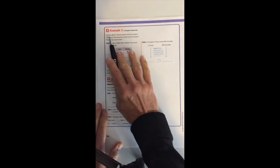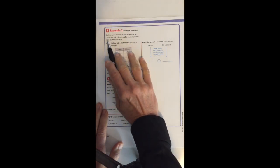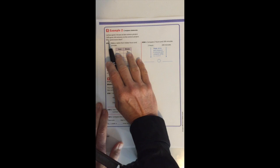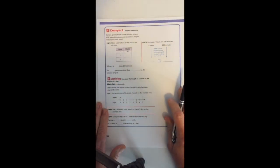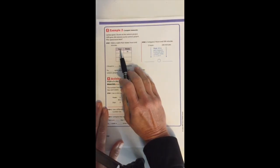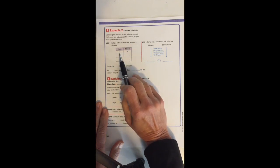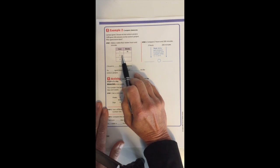On the next page, the question says Larissa spent two hours on her science project. Cliff spent 200 minutes on his science project. Who spent more time? So we want to compare two hours to 200 minutes. One way we might do this is to make a table with a column for hours and a column for minutes.